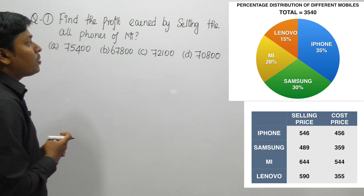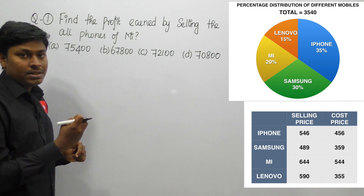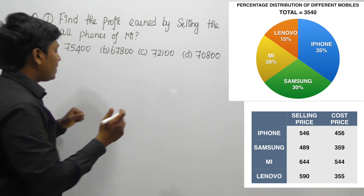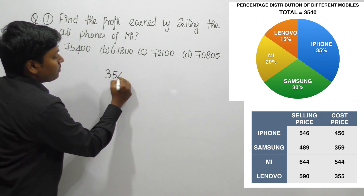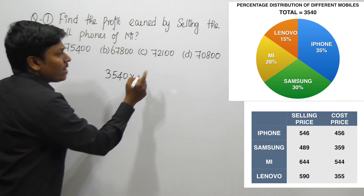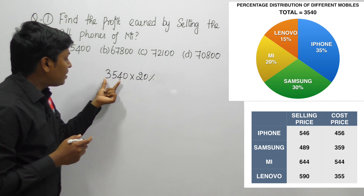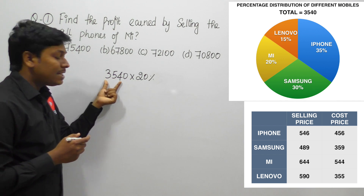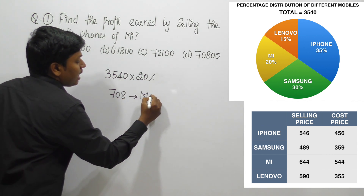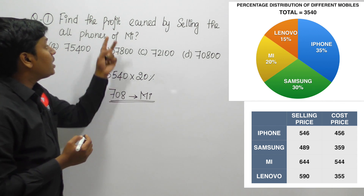Question number one: find the profit earned by selling all phones of Mi. Our target is to find the profit earned from all Mi mobile phones. Out of 3540 total mobiles, Mi represents 20%. So 10% will be 354, and 20% will be 708. Therefore, there are 708 Mi mobiles.